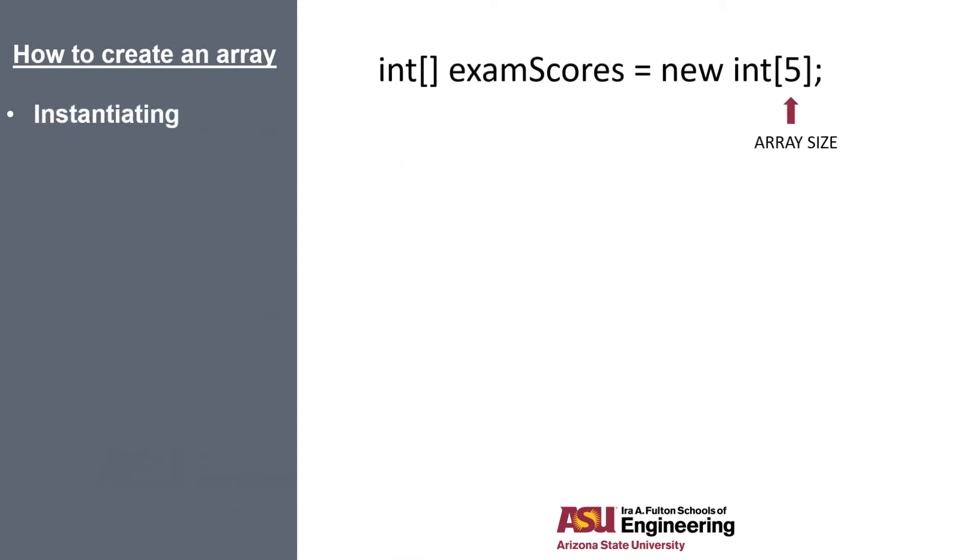Now we're going to talk about instantiating an array. When we instantiate, we're actually setting aside some memory for the entire array. And remember, an array must contain a fixed number of values. By using the new keyword and the type, followed by another square bracket containing the array size, we allocate some memory to contain five integers. In this example, we're keeping track of five students' exam scores.